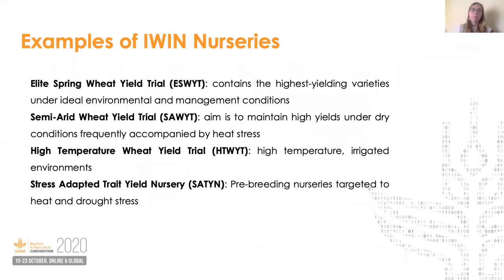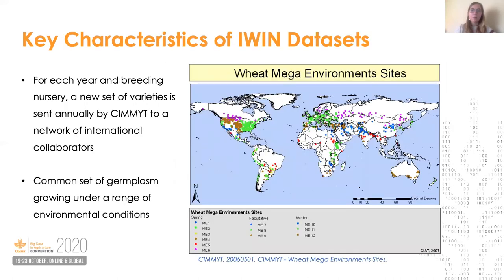The IWIN distributes a number of different types of nurseries. Perhaps one of the most well-known is the Elite Spring Wheat Yield Trial, or ESWYT, which contains high-yield potential spring wheat germplasm adapted to Mega Environment 1. This is one of the longest-running IWIN nurseries, first established in 1981. In addition to ESWYT, there are nurseries targeted at other mega environments, specific types of stress profiles, diseases, and different types of breeding material. Within the IWIN, there are around 700 testing locations, each assigned to a different mega environment. There is generally somewhat limited overlap from year to year in terms of germplasm tested, because each year represents a new set of breeding material.